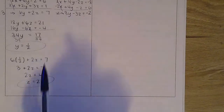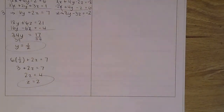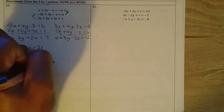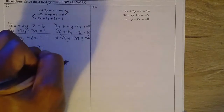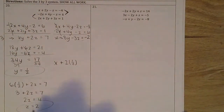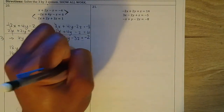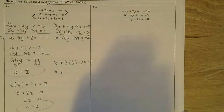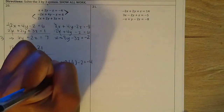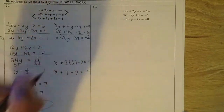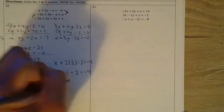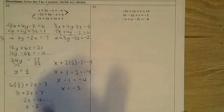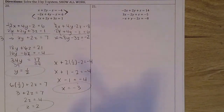We have 2 of our 3 variables. Plugging back into the first equation: x plus 2 times 1 half minus 2 equals negative 4. That simplifies to x plus 1 minus 2 equals negative 4, so x minus 1 equals negative 4. Adding 1 to both sides: x equals negative 3. We are done with question number 20.